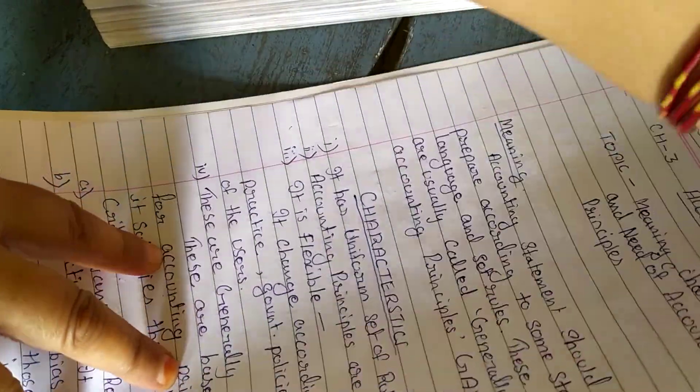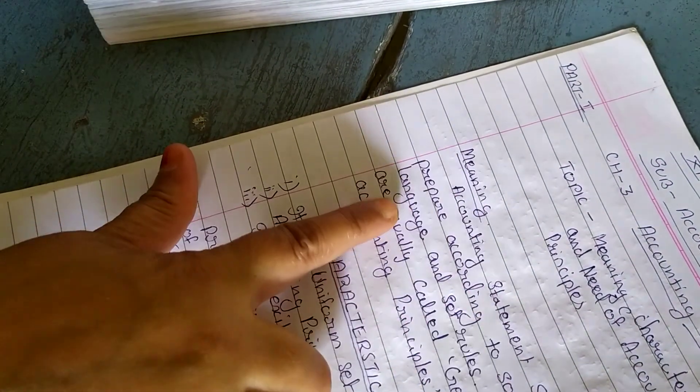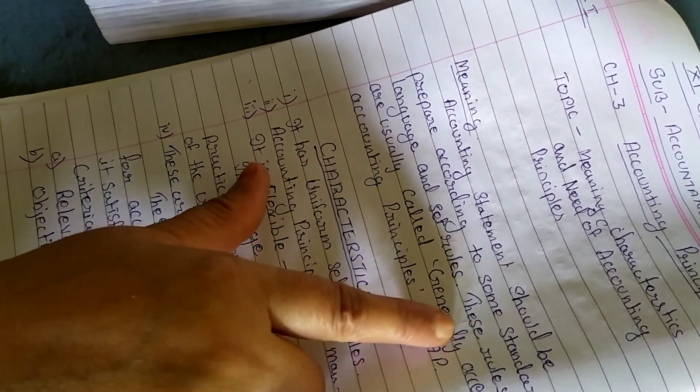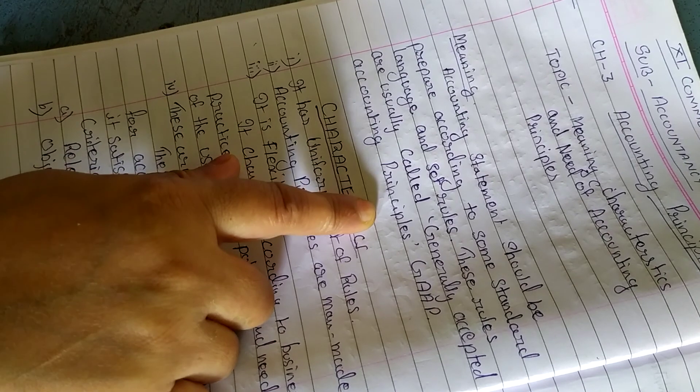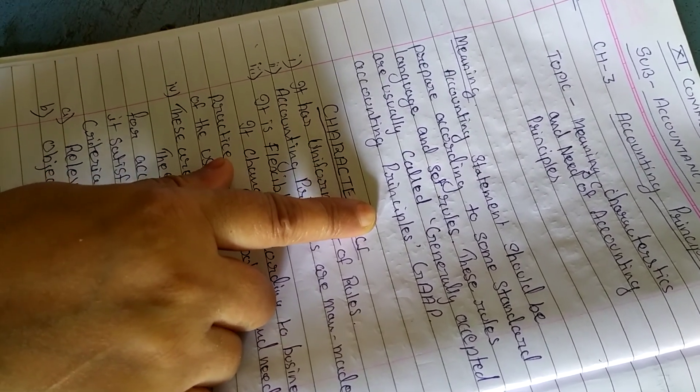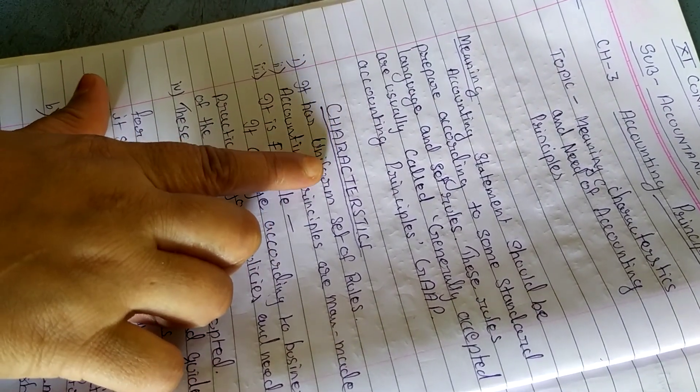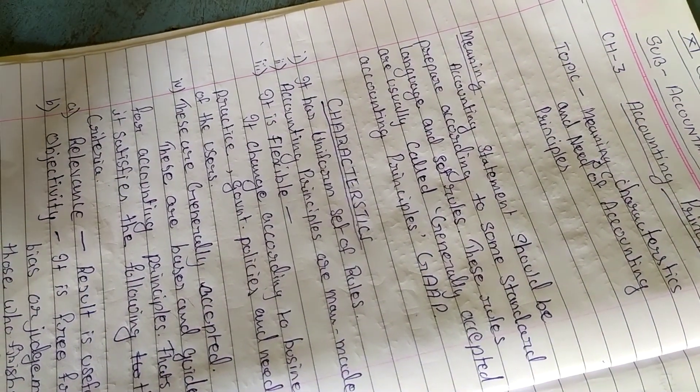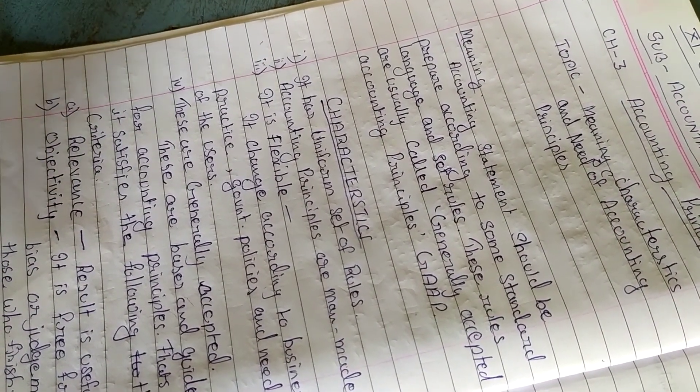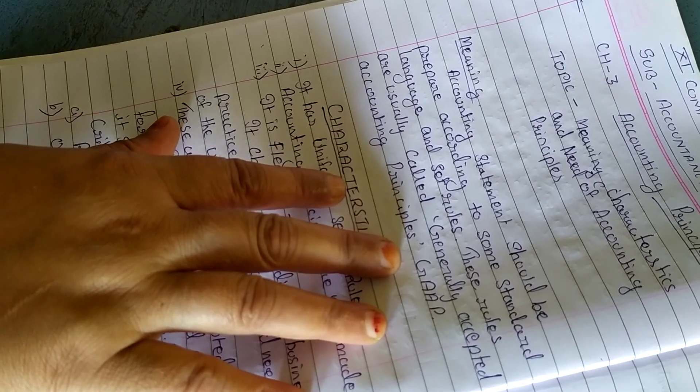Let's start with the introduction of Accounting Principle. Accounting statements should be prepared according to some standard language and set rules. These rules are usually called Generally Accepted Accounting Principles. So, in order to maintain uniformity in accounting statements, and also maintain the standard in accounting statements, we have to require the Accounting Principle.